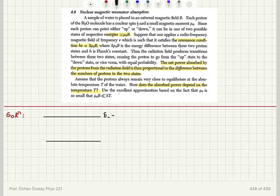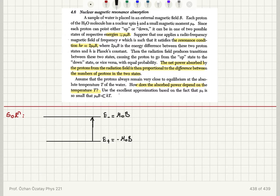When the moment is −μ₀, we have an energy +μ₀B, and when the moment is +μ₀, we have an energy −μ₀B. Transitions between these two states can happen, and the energy difference is 2μ₀B. So we can have resonant absorption of a photon energy hν, which means resonant absorption will occur when we apply an alternating magnetic field.